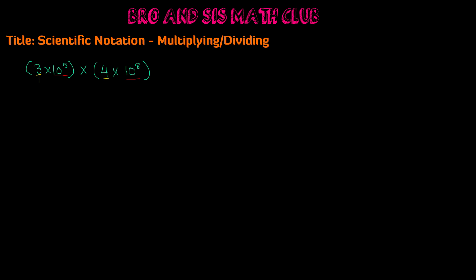So we're going to multiply 3 times 4 in one set of parentheses, and then multiply the exponents. Remember, they always have the same base of 10, so it's 10 to the 5th power times 10 to the 8th power. We know that 3 times 4 equals 12, times 10 to the 5th times 10 to the 8th. The property of exponents states that when you have the same base and you're multiplying, you add the exponents — so the 5 and the 8.